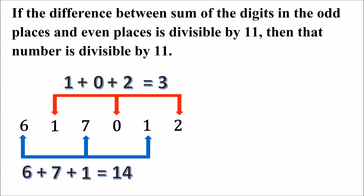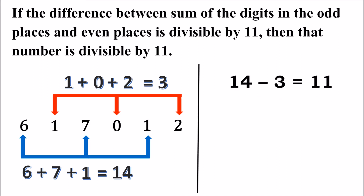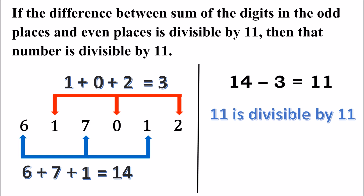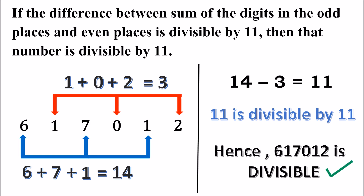Now we have the sum of the digits at the odd places and the sum of the digits at the even places. We subtract 3 from 14, so 14 minus 3 is 11. The difference is 11, and 11 is divisible by 11. So the given number is divisible by 11.